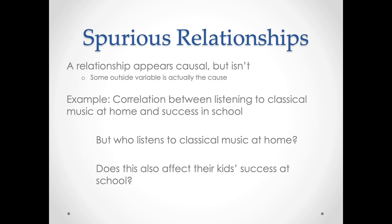The thing researchers found was that listening to classical music at home is highly related to being wealthy. Wealthier families are more likely to listen to classical music, and wealthier families are more likely to have children who are successful in school — their parents tend to be more educated and can help in school, and have more resources to dedicate to the children. The consequence is that giving low-income families classical music to listen to doesn't suddenly change their test scores. You need to actually give the children or families wealth, not their music collection, to see the difference. Wealth is the spurious variable within the relationship between classical music and school performance.